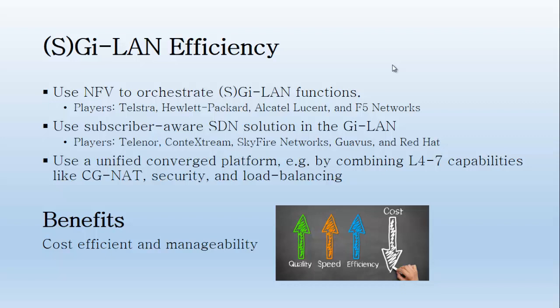The last approach is using a unified, converged platform — for example, by combining all Layer 4 to Layer 7 capabilities into a single node, thereby separating their functionality. For instance, functions like CGNAT, Security, and Load Balancing can be combined into a converged platform and separated by convergence.